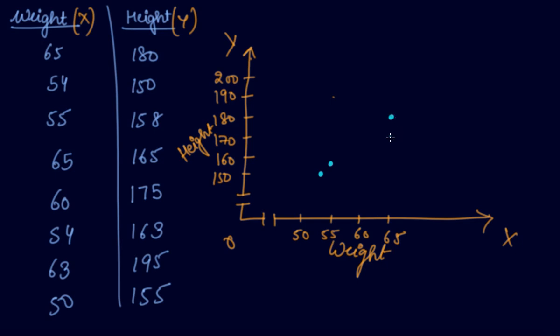165 is somewhere here. Then we have 60 and 175, 54 and 163, 63 and 195 is somewhere here. So, 50 and 158, 50 and 155.